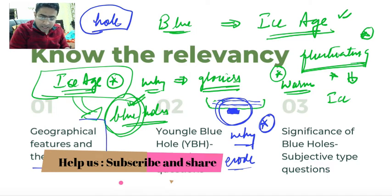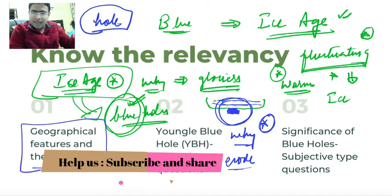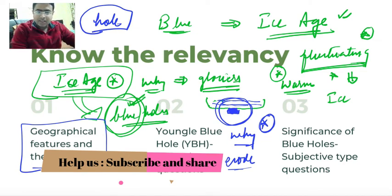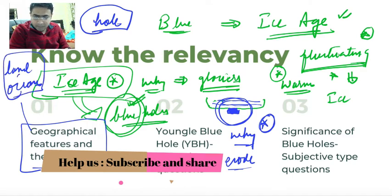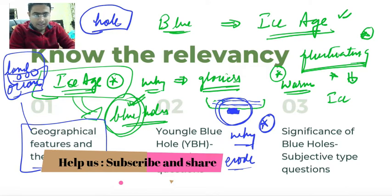Generally, where are these blue holes found? When ice recedes, it won't recede from the entire ocean — the water basically recedes from the corners of the ocean. So when water recedes from the ocean edges, the biggest likelihood of finding a blue hole is where land and ocean meet.